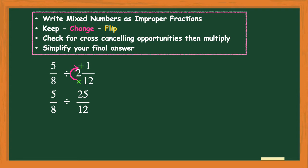So we're going to keep 5/8, change the division to multiplication, and flip 25/12 to its reciprocal of 12/25. Remember, whenever we flip a fraction it's called taking the reciprocal of the fraction.